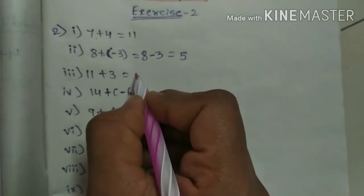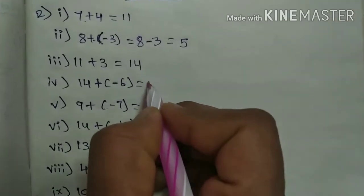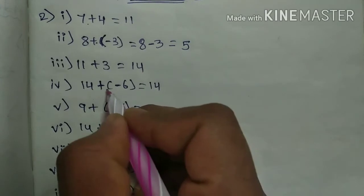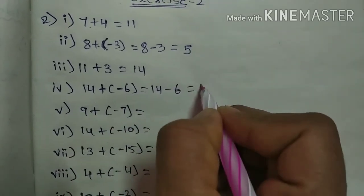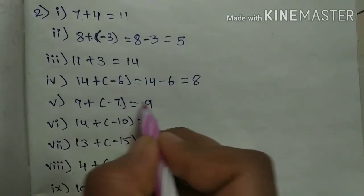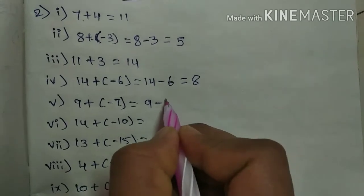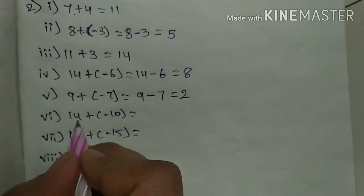Next, directly addition: 11 plus 3 is 14. Next, 14 plus into minus minus 6, so 14 minus 6 is 8. And here, 9 plus into minus minus 7, so 9 minus 7 is 2.